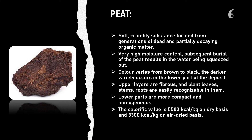Peat is the first step in the formation of coal, hence called baby coal or precursor of coal. It exhibits the lowest carbon content. It is a soft, crumbly substance formed from generations of dead and partially decaying organic matter, and has very high moisture content. Subsequent burial of the peat results in the water being squeezed out. Its color varies from brown to black, with the darker variety occurring in the lower part of the deposit. Upper layers are fibrous and plant leaves, stems, and roots are easily recognizable in them, while lower parts are more compact and homogeneous. The calorific value is 5500 kcal/kg on a dry basis and 3300 kcal/kg on an air-dried basis.